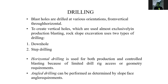Drilling blast holes are drilled on various orientations, from vertical to horizontal. Vertical holes are used almost exclusively in production blasting for rock slopes and excavation, using types such as down-hole and step drilling. Horizontal drilling is used for both production and controlled blasting due to limited drill rig access and geometry requirements. Angle drilling can be produced as determined by slope face and angle requirements.